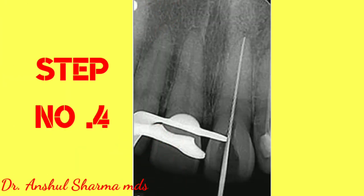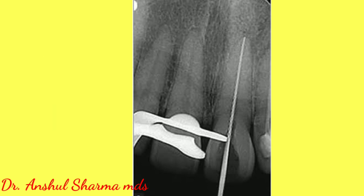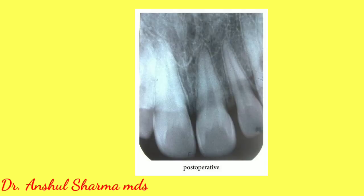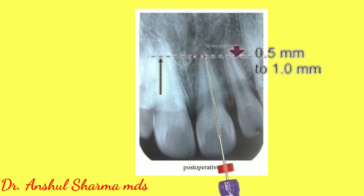The fourth step is to again insert the K file with the pre-adjusted working length into the canal and repeat the radiograph. We then check whether the apex of the K file is 0.5 to 1 millimeter short with reference to the radiographic apex.